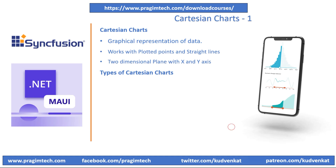Some common types of Cartesian charts include line chart, where data points are connected with straight lines. Line charts are used to show trends over a continuous interval or time. Scatter plot, where individual data points are plotted without connecting lines — useful for displaying the distribution and relationship between two variables. Bar chart uses rectangular bars to represent the values of different categories, where the length of each bar corresponds to the value it represents.